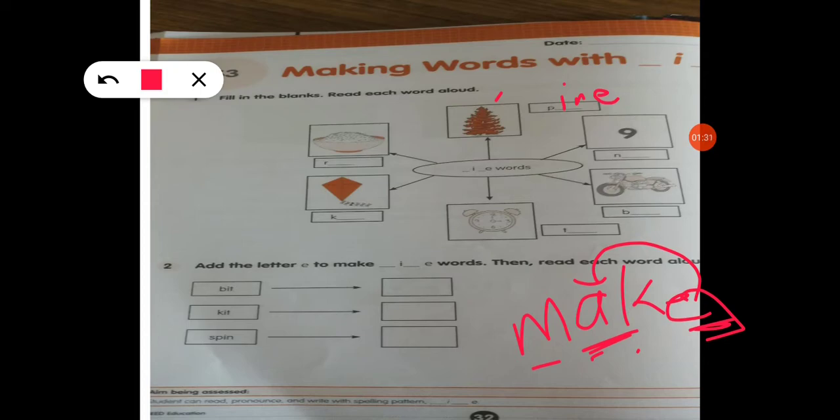Next one is nine, number nine. N-I-N-E. E is in the spelling, but this is not its sound. It doesn't give its own sound. Bike: B-I-K-E. E is added, but it doesn't give its own sound. It is silent.